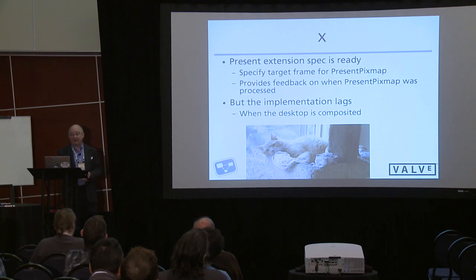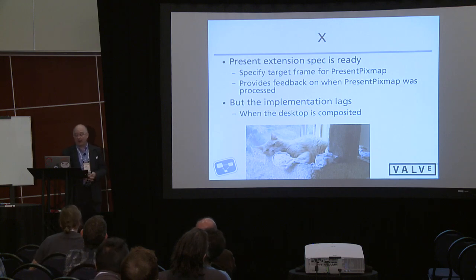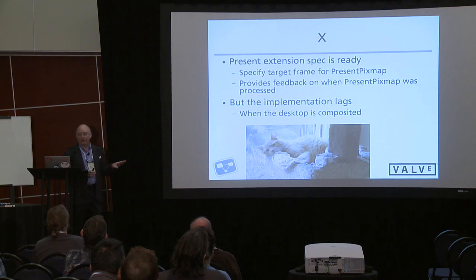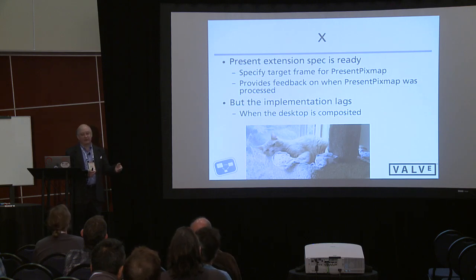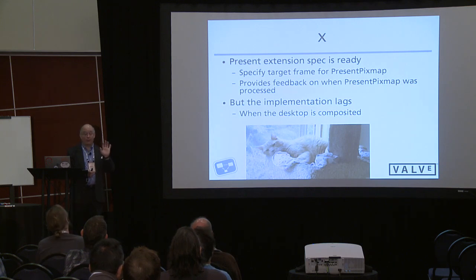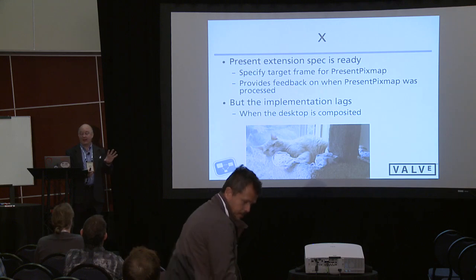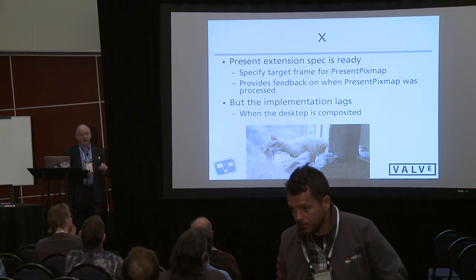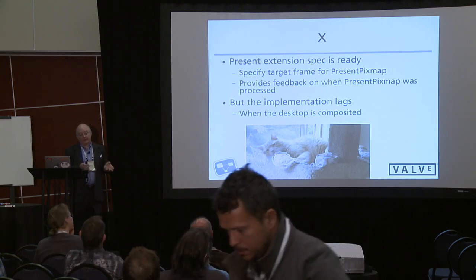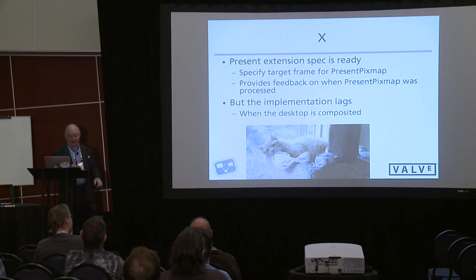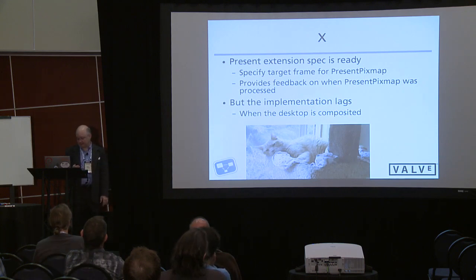Now I'll talk about some changes in X. Because of the work done with the OML sync control extension for GL, the present extension actually provides enough information to close the loop — it provides control over when things are going to be displayed and tells you when things were displayed. Unfortunately, the implementation lags the capabilities of the extension. When the desktop is composited, there is a bug.